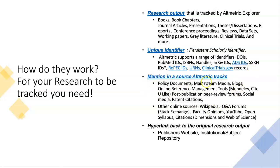It also needs to be mentioned in a source that Altmetric tracks. Altmetric doesn't track everything, but it does track policy documents, media, blogs, reference management tools like Mendeley, post-publication peer review forums, social media, patent citations, and other online sources including Wikipedia, Q&A forums, Faculty Opinions, and YouTube. You'll find a full listing on their website. You also need a hyperlink back to the written research output — a link back to the publisher's website or a repository where the paper is, because people will need access to it. Once you cover all those, it improves the chance that your research will be tracked by Altmetric and you'll get those attention score metrics.